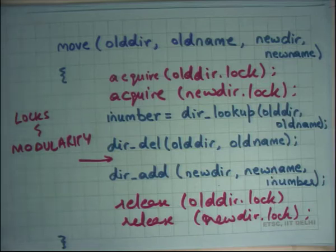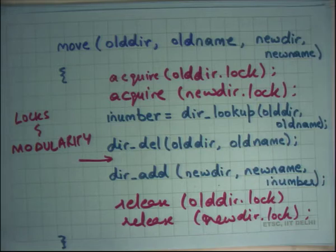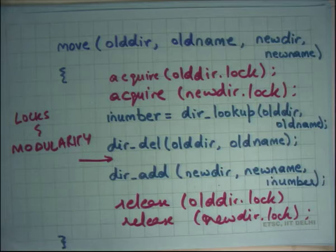The semantics now need to specify that this function will delete a name from the directory and should assume a lock has already been taken - it should not take a lock itself. Locks and fine-grained locking especially complicate things; locks are not friendly to modularity, they make your code more complex and less modular.